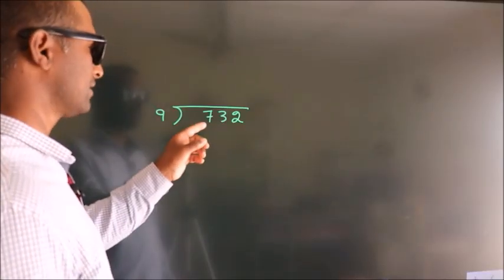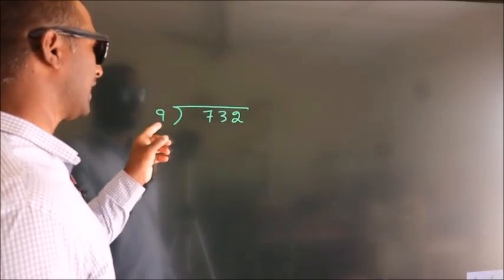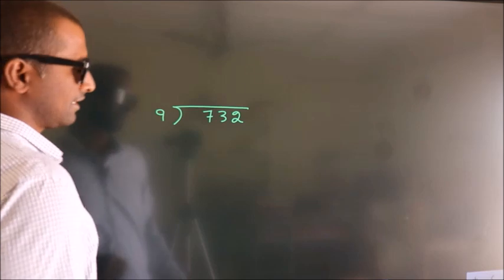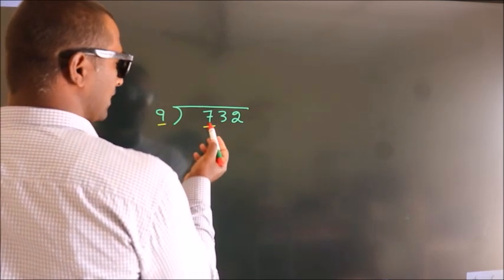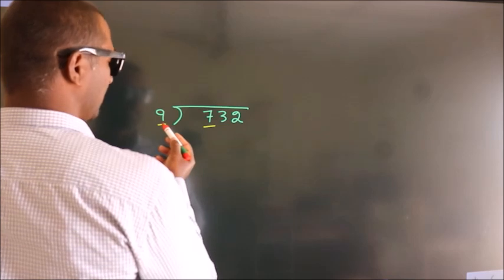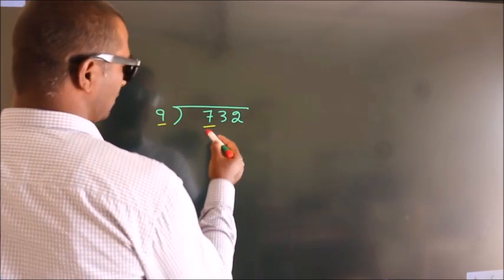How to divide 732 by 9? See, here we have 7 and 9. 7 is smaller than 9, so we should take 2 numbers.